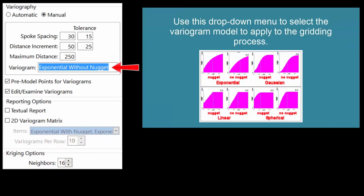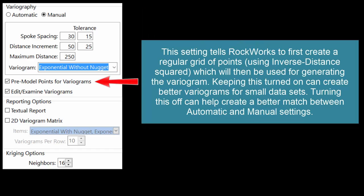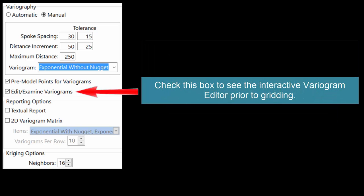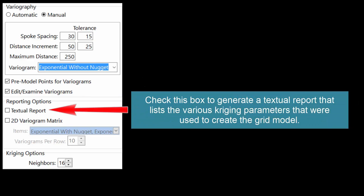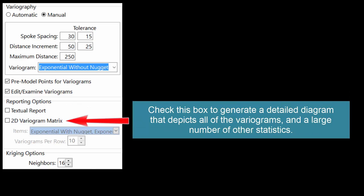Use this drop-down menu to select the variogram model to apply to the gridding process. This setting tells Rockworks to first create a regular grid of points using inverse distance squared, which will then be used for generating the variogram — keeping this turned on can create better variograms for small data sets, while turning it off can help create a better match between automatic and manual settings. Check this box to see the interactive variogram editor prior to gridding. Check this box to generate a textual report that lists the various kriging parameters used to create the grid model. Check this box to generate a detailed diagram depicting all of the variograms and a large number of other statistics.